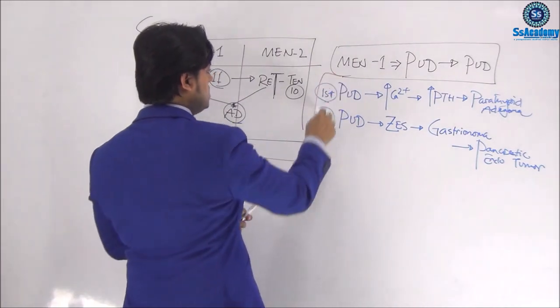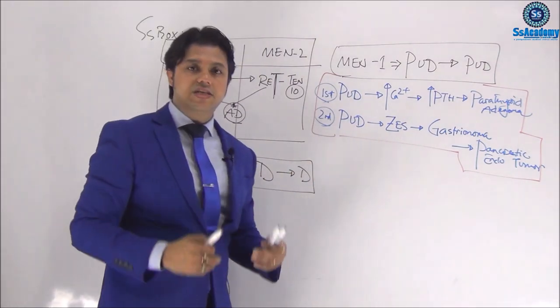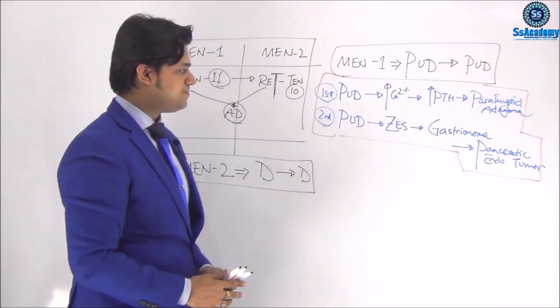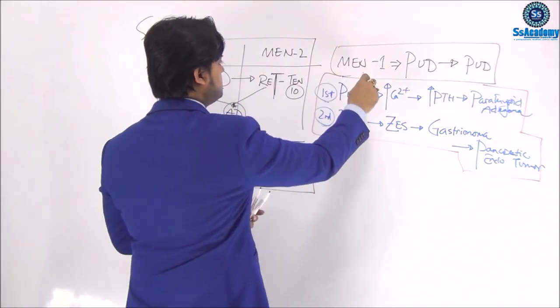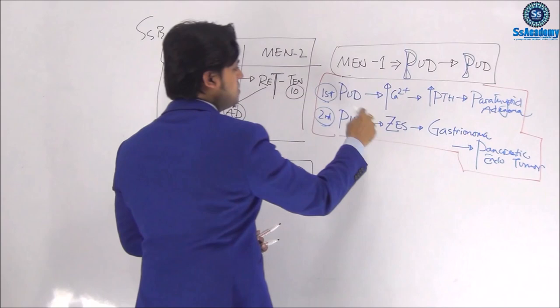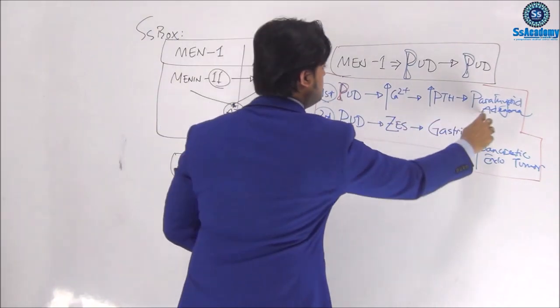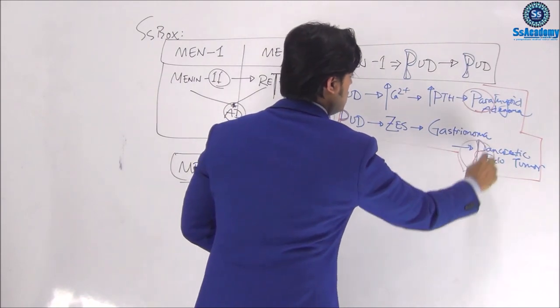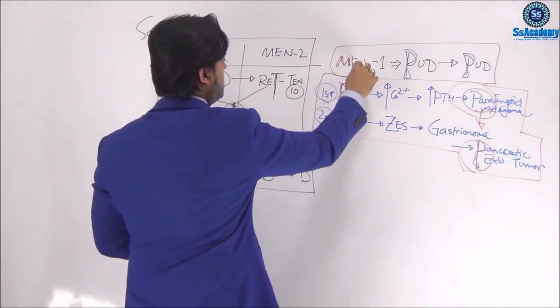So this is not only the mnemonics, this is also the typical MEN-1 syndrome will come up with us. So starting with MEN-1, I said multiple endocrine neoplasia type 1 is putie followed by putie. And first putie, remember, is due to the hypercalcemia due to parathyroid tumor. And second putie, Zollinger-Ellison syndrome, gastrinoma is a pancreatic tumor.